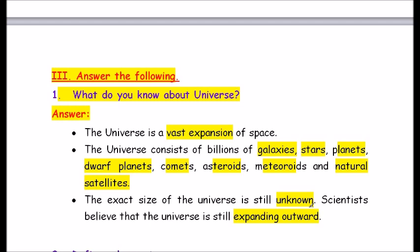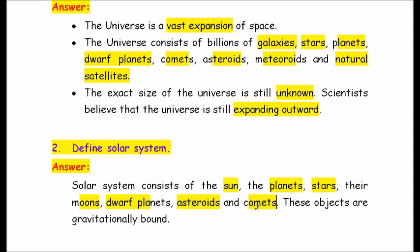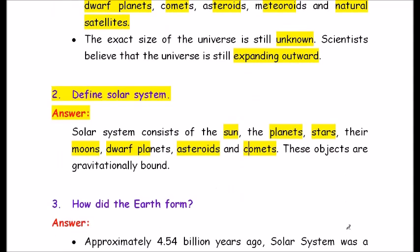Question number 2: Define solar system. Answer: The solar system consists of the Sun, the planets, their moons, dwarf planets, asteroids and comets. These objects are gravitationally bound.